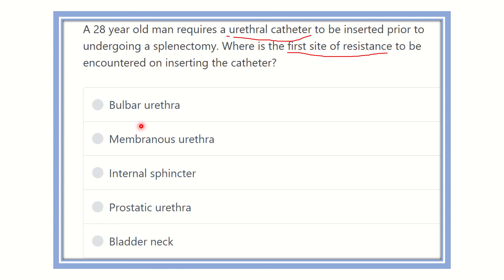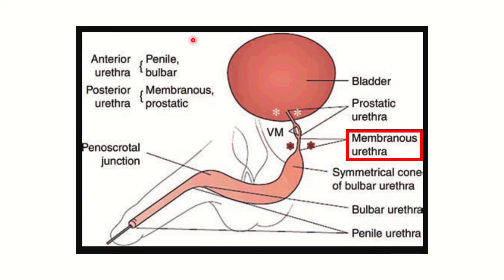We have to find the most constricted part of the urethra, because the most resistance will develop where the urethra is narrowest. In this picture, we can see the urinary bladder and the urethra. From here to here is the penile urethra, the second part is the bulbar urethra, the third part is the membranous urethra, and the last is the prostatic urethra.